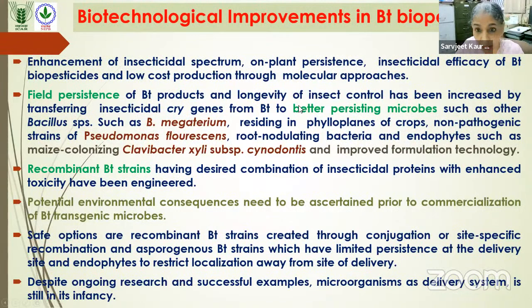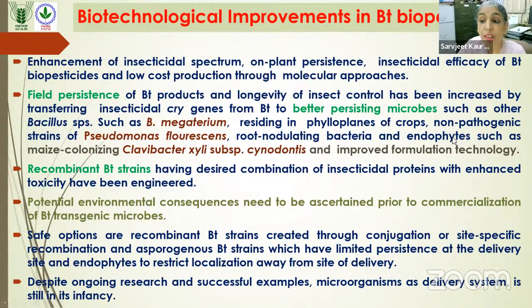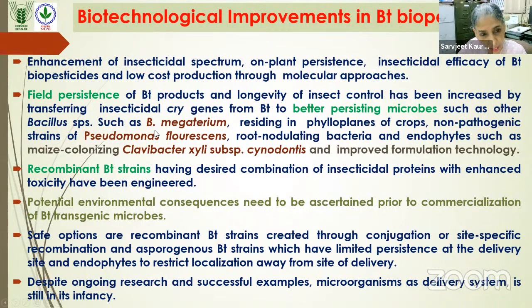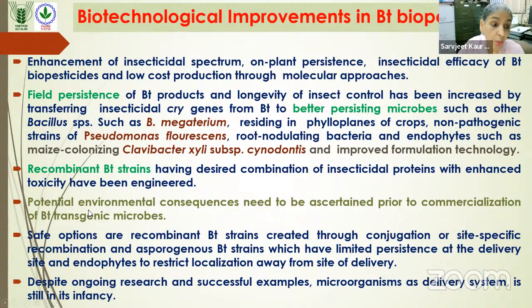Field persistence has been increased by transferring cry genes from Bt to better-persisting microbes, such as Bacillus megaterium, non-pathogenic strains like Pseudomonas fluorescens, root-nodulating bacteria, and endophytes that naturally colonize plants — for example, Clavibacter xyli subsp. cynodontis. Pseudomonas was then killed and encapsulated to provide better persistence. Recombinant Bt strains with a desired combination of insecticidal proteins have also been developed by transferring genes to Bt strains. For these transgenic microbes, potential environmental consequence assessment must be done before commercialization.